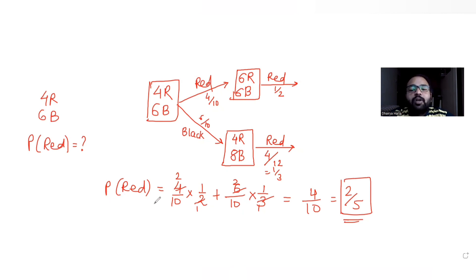So the probability of picking a red ball which was asked to us in the question is 2 by 5, and that matches with option D. So the correct answer for this question is D. This was a very easy question of probability.